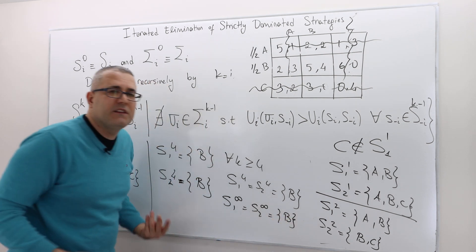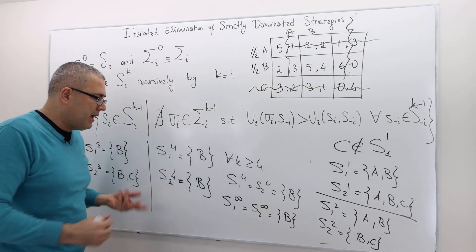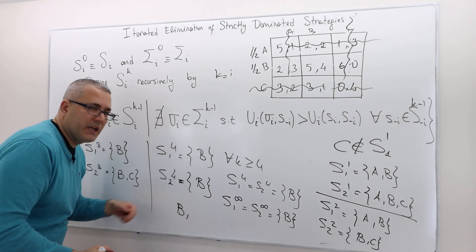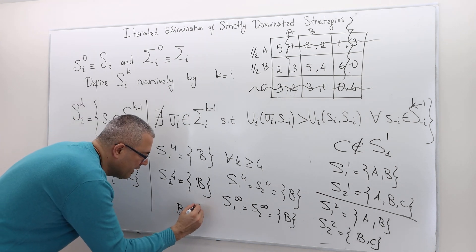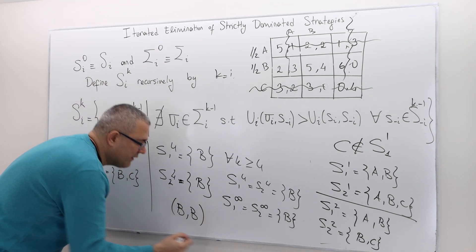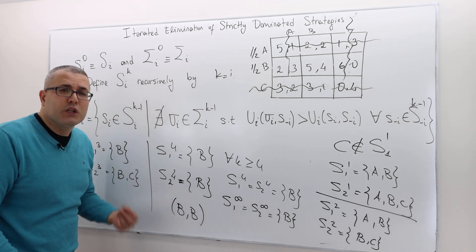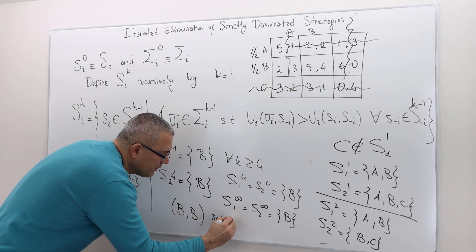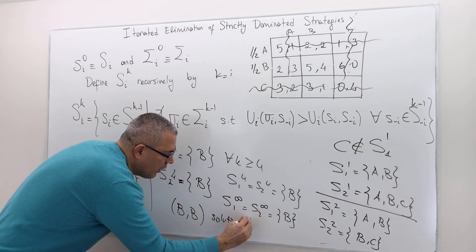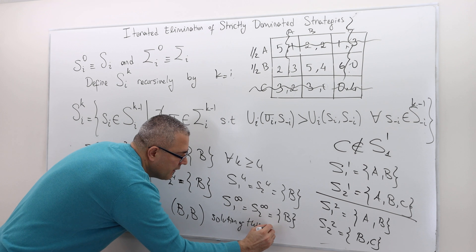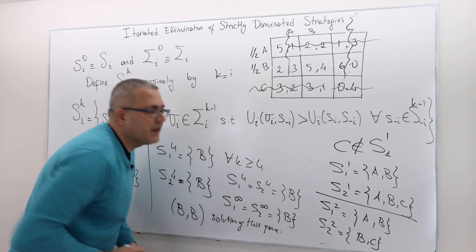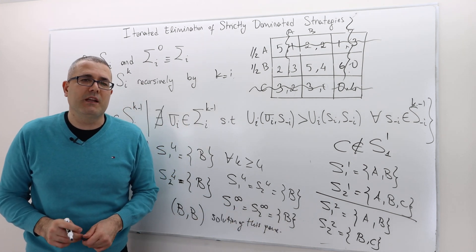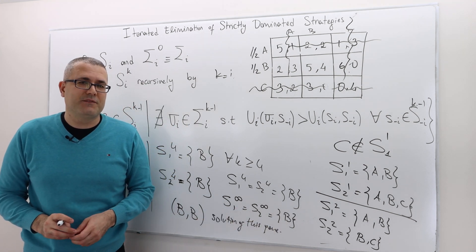So S_1^∞ and S_2^∞ are both {B}. This game is solvable, and the solution is: player one plays B, player two plays B. This is exactly how we apply iterated elimination of strictly dominated strategies.